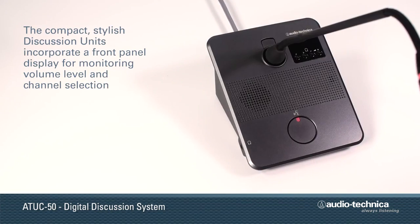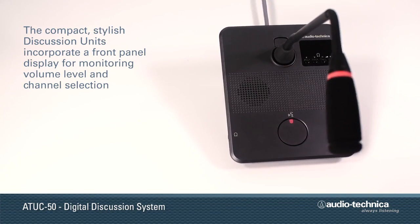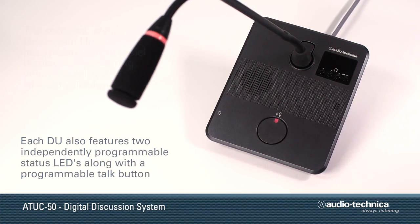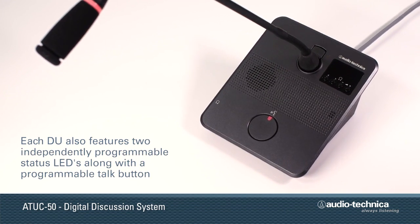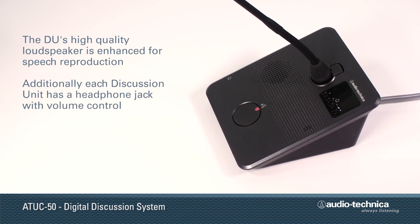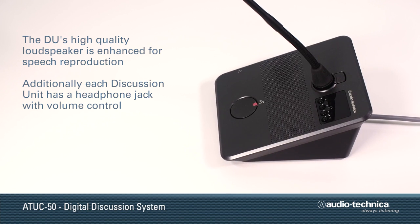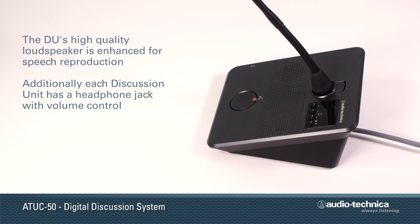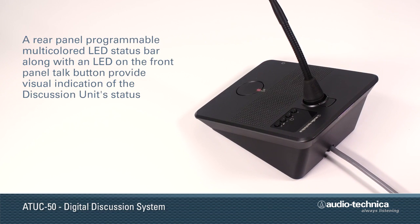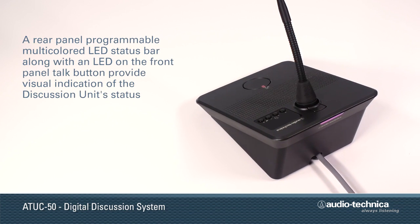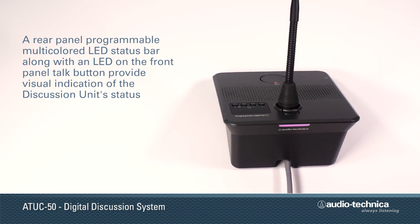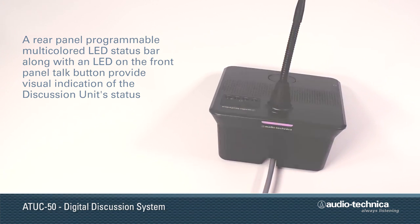The compact, stylish discussion units incorporate a front panel display for monitoring volume and channel selection, two independently programmable status LEDs, channel select buttons, and a programmable talk button. Along with a high-quality loudspeaker enhanced for speech intelligibility, each discussion unit has a headphone jack with volume control. A multicolored LED status bar on the ATUC50DU and LED on the front panel talk button provide visual indication of discussion unit status.